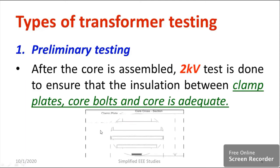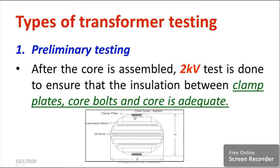Let us figure out different segments such as the clamp plate and the lamination block. We are going to provide lamination in the core to reduce eddy current loss. Similarly, an oil deck is also available. Everywhere you need to check that the insulation provided is sufficient or not — that is why you generate a test voltage and apply it. This is known as preliminary testing.